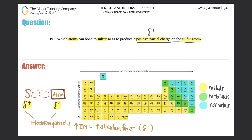The higher the electronegativity, the more partial negative you are — it's all about being electronegative, attracting electrons which are negative. So for this atom to be partial negative, since sulfur is stated to be partial positive, the bonding atom must have a higher electronegativity. When the electrons are divided up, they'll be pulled closer to the atom with greater pull — the more 'greedy' atom.